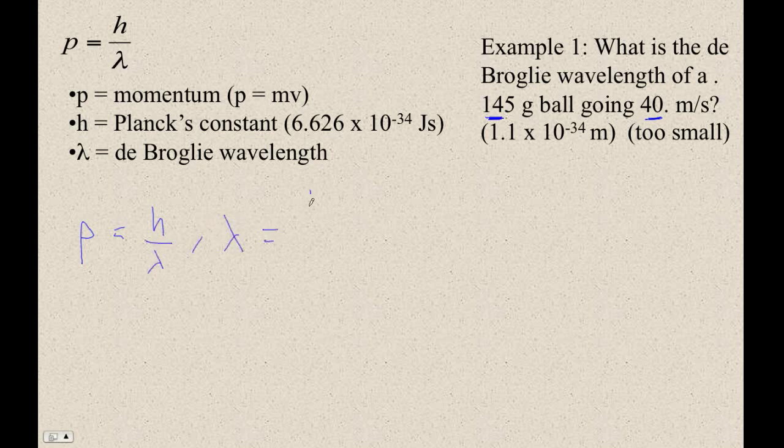And then, of course, lambda is H over p, which is H over MV. So that's going to be 6.626 E minus 34 joule seconds. And then it's like, okay, but what is a joule? A joule is a kilogram meter squared per second squared, times seconds.